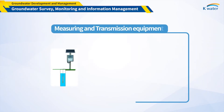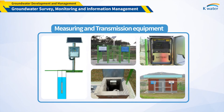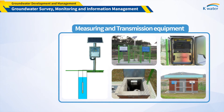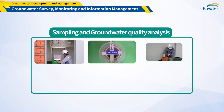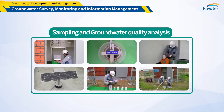The Groundwater Monitoring Network consists of a groundwater monitoring well, automatic measuring equipment for water level, water temperature, and electric conductivity, a data logger, and transmission equipment. Data is measured on an hourly basis. Inspection and maintenance teams make efforts to obtain reliable data through inspection of monitoring equipment, sampling, and groundwater quality analysis.